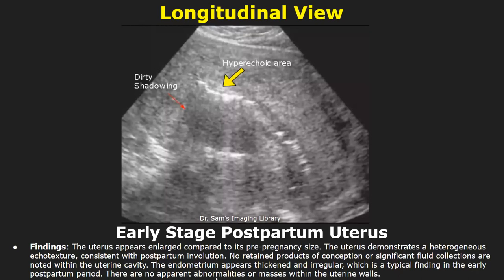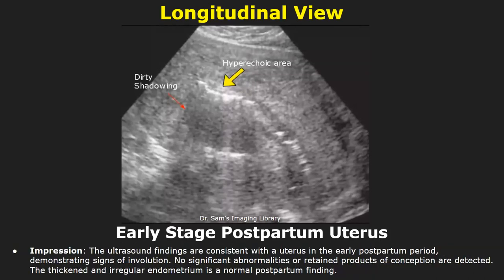There are no apparent abnormalities or masses within the uterine walls. In the impression you can mention that the ultrasound findings are consistent with a uterus in the early postpartum period demonstrating signs of involution, and there were no significant abnormalities or retained products of conception detected. The thickened and irregular endometrium is a normal postpartum finding.